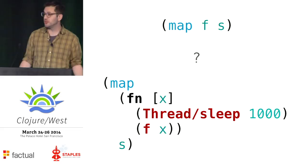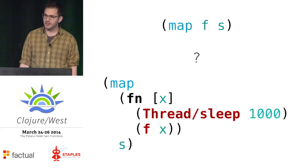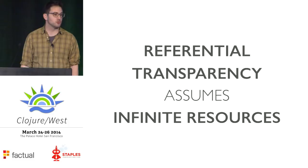Here we map a function over a sequence, and then again map that same function over the sequence, but first we sleep for a second. These return the same thing — they're equivalent. But are they the same? And if so, what if we sleep for an hour, or a day, or a year? At some point we have to admit that the only way these two things are interchangeable is if we have all the time in the world.